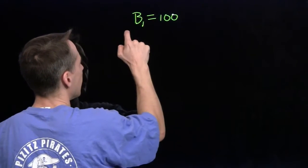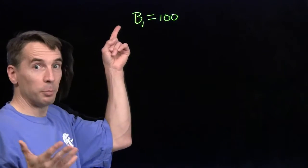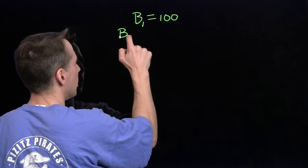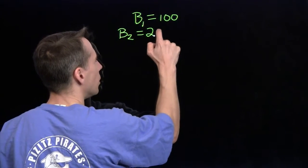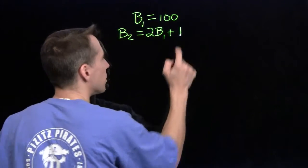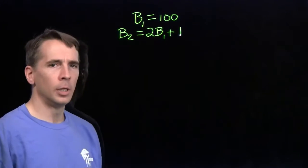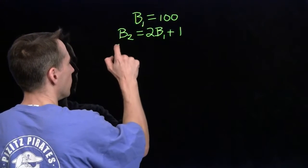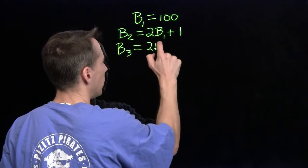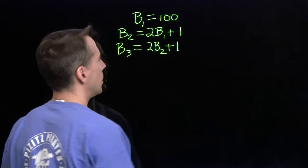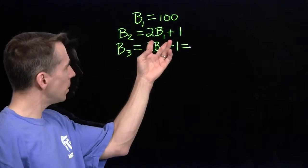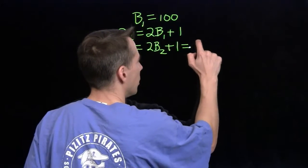So b-sub-one is 100, where b stands for bee and the subscript tells me which bee it is. The second bee, b-sub-two, gets double the pollen of the first bee plus one — that's the rule. For the next bee, b-sub-three, it's double b-two plus one. When I double b-two, I multiply two by two, that's two squared. I keep the exponent rather than multiplying out, because I'm looking for patterns.